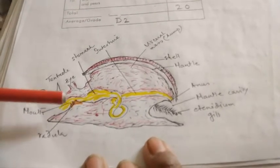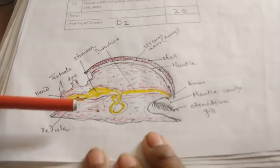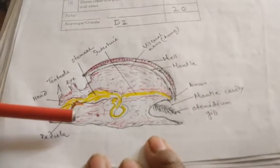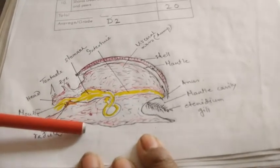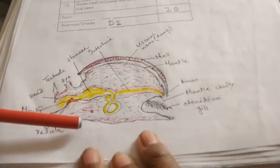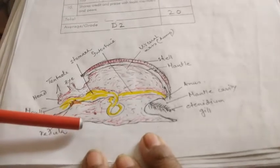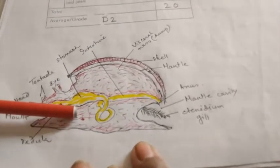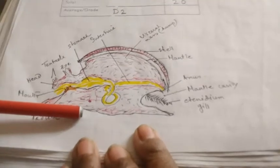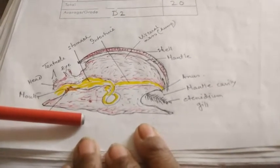For reproduction we will find the sexes are separate, fertilization may be internal or external. Most of them are oviparous, they lay eggs. Have you seen the eggs of the snail? Their development may be direct or indirect through larva like glochidium or veliger larva.